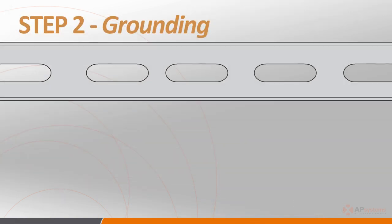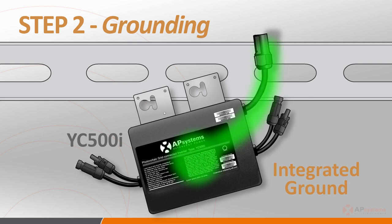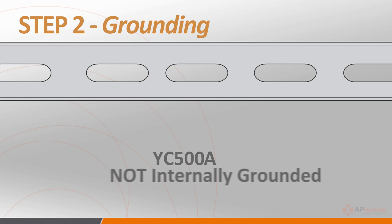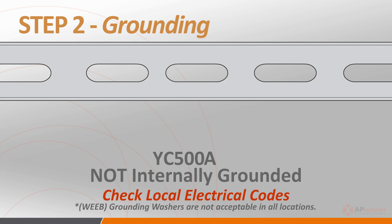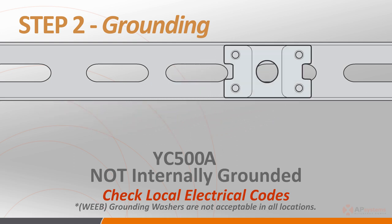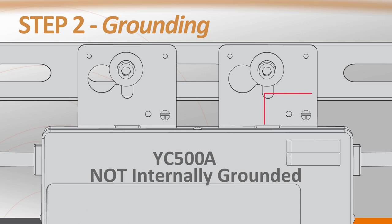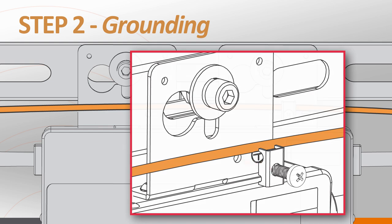Step 2 is making sure that the inverters are properly grounded throughout the system. Unlike the YC500I, which has a grounding wire integrated into the cable, the YC500A is not internally grounded within the chassis, so it requires an external ground. Depending on your jurisdiction — and it's always best to check with your local inspector — you can either use a grounding washer when attaching the inverter to the rail of a well-grounded racking system, or use the grounding lug on the YC500 to string bare copper wire to an appropriate system grounding location.